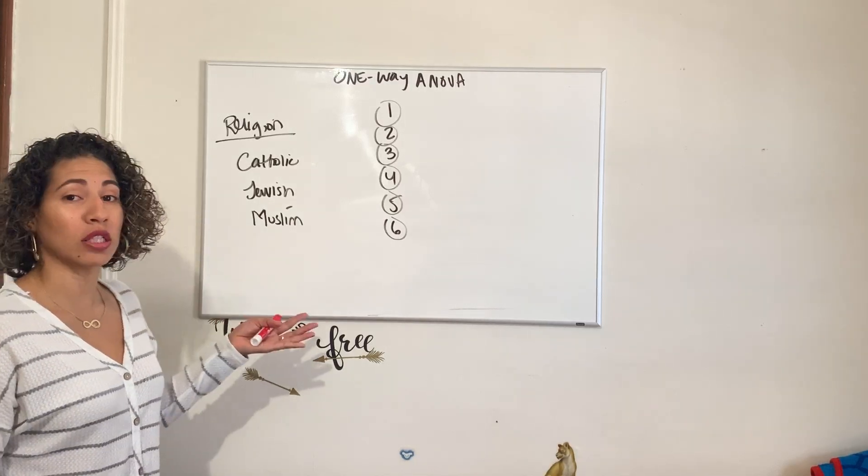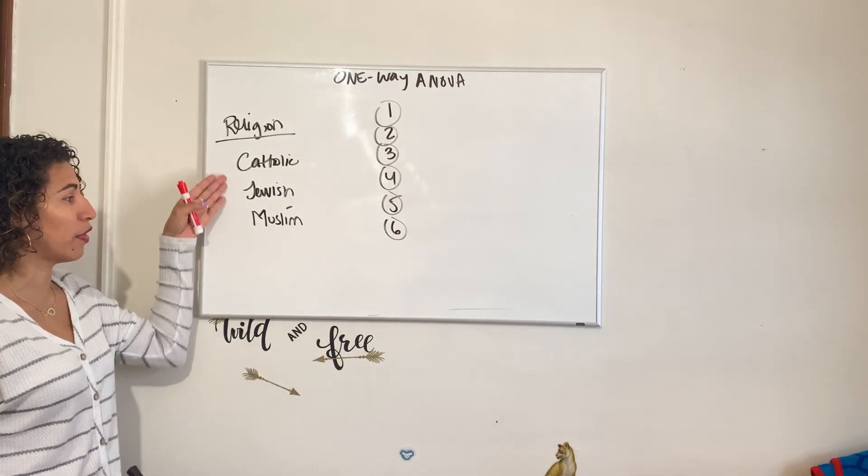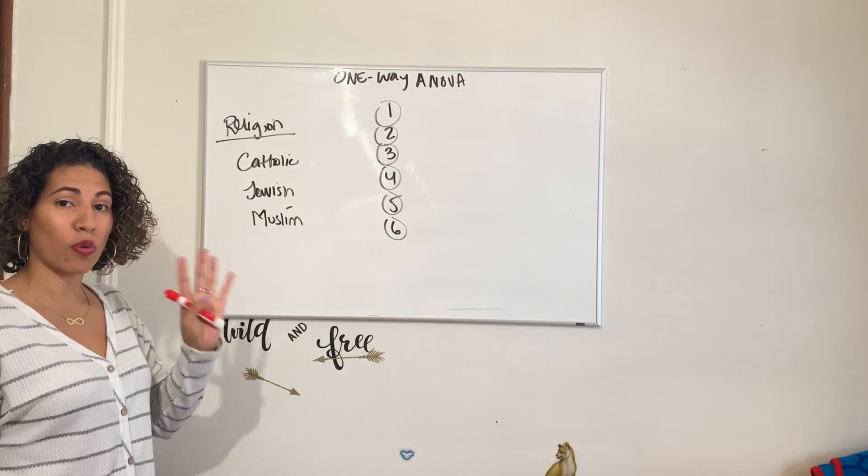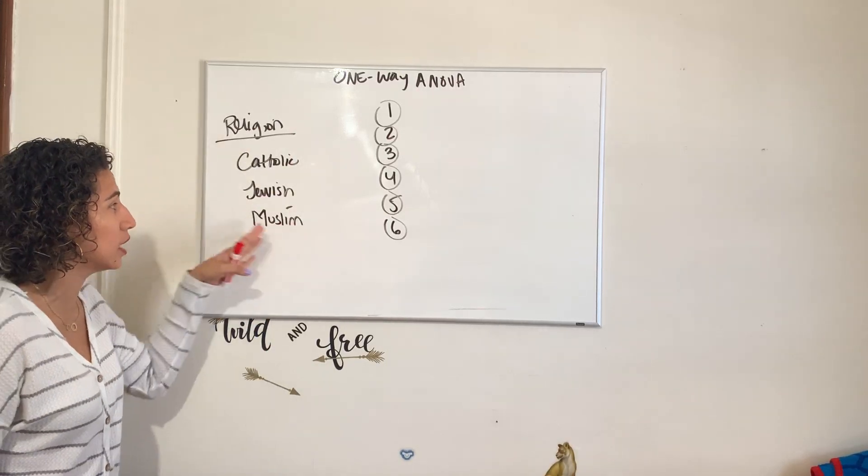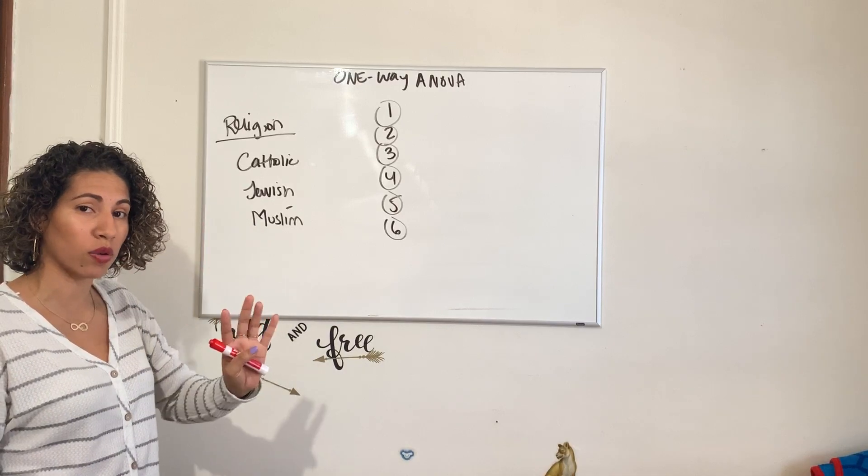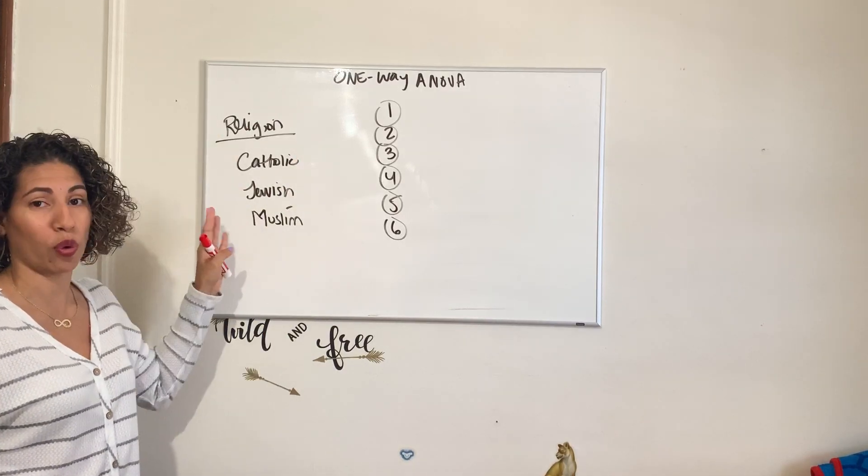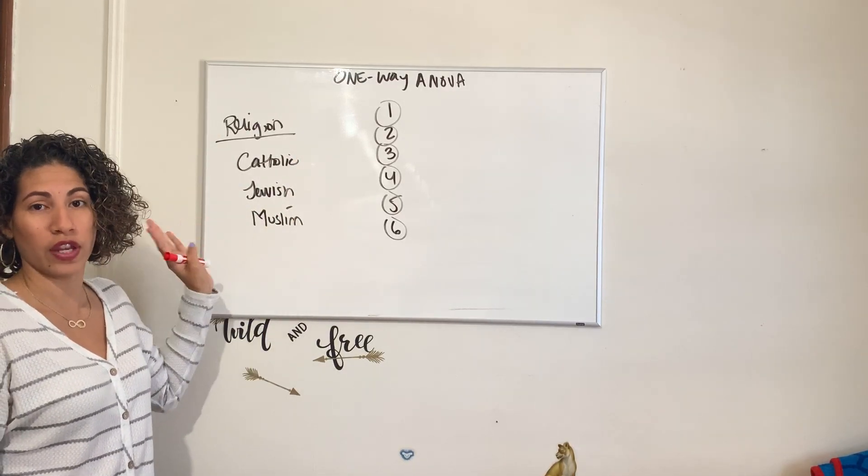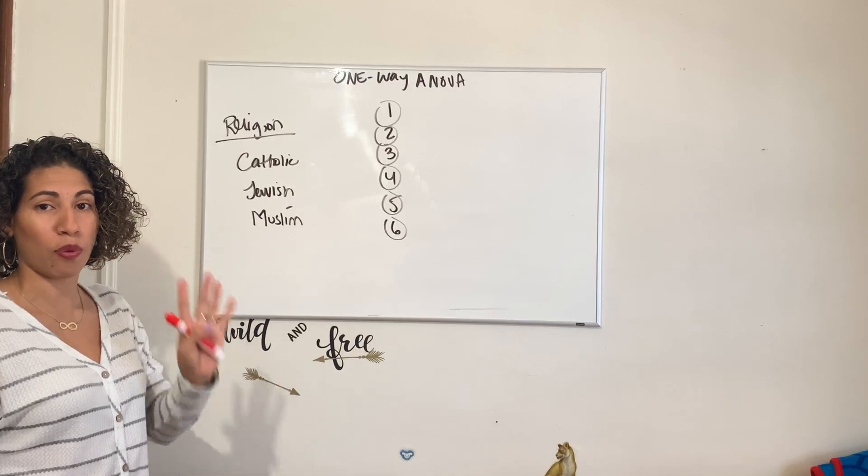So if we talked about religion, there were three types: Catholic, Jewish, and Muslim. The one-way ANOVA will allow us to simultaneously compare all three in one model, keeping us at the experiment-wise alpha of 95% with an alpha level of 0.05.